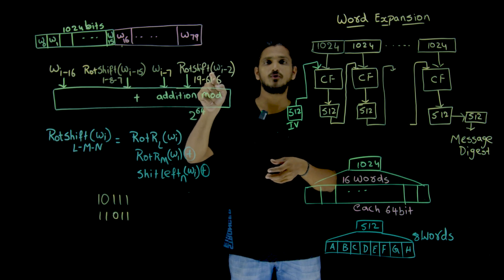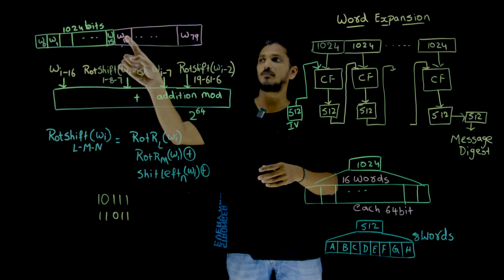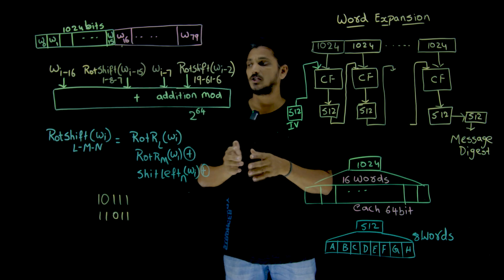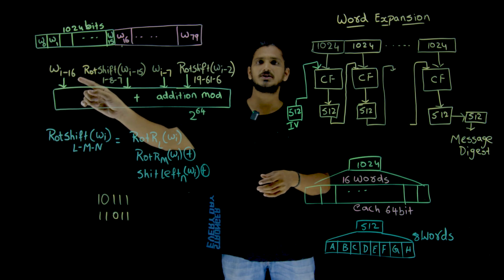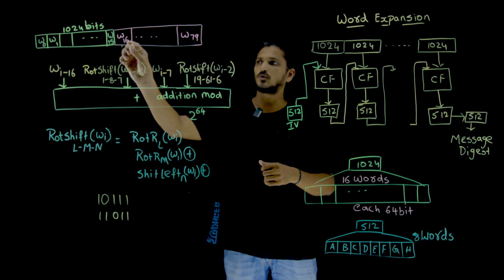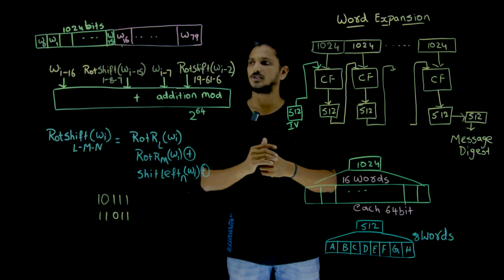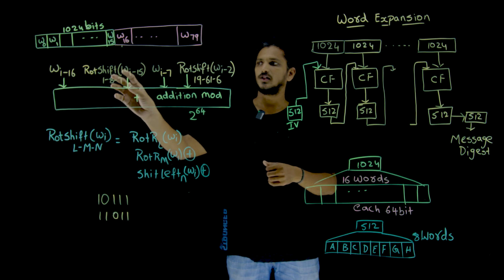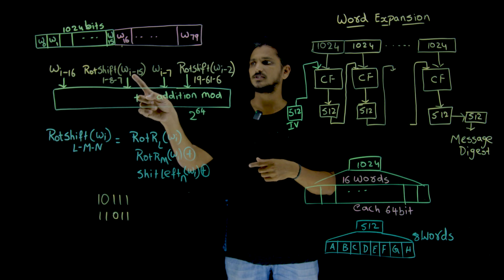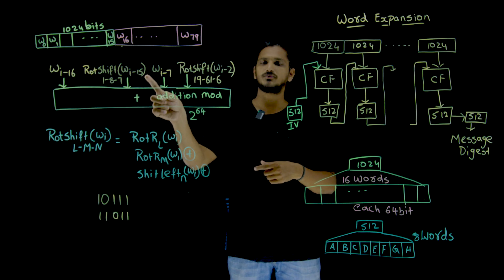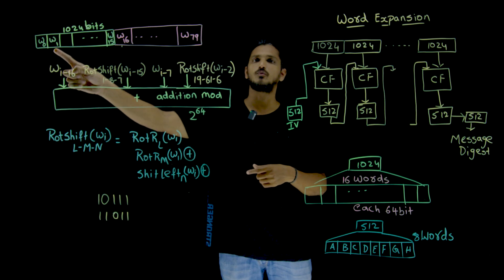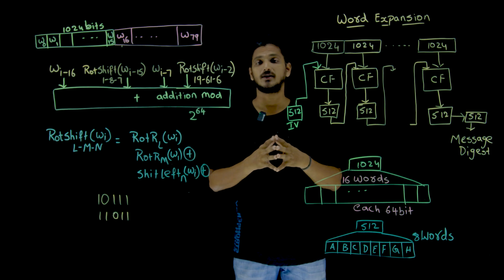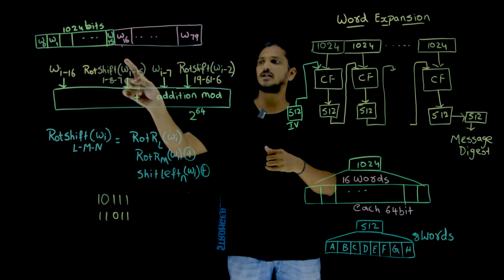This is the formula used to generate the remaining words. To generate w16 (i = 16): wi = wi-16 + σ0(wi-15) + wi-7 + σ1(wi-2). So wi-16 = w0, wi-15 = w1, wi-7 = w9, and wi-2 = w14 are all considered. The rotate-shift functions σ0 and σ1 are applied to wi-15 and wi-2 respectively.